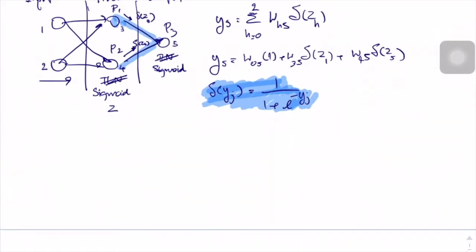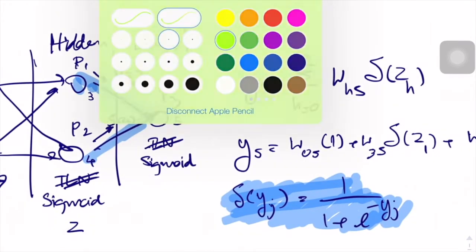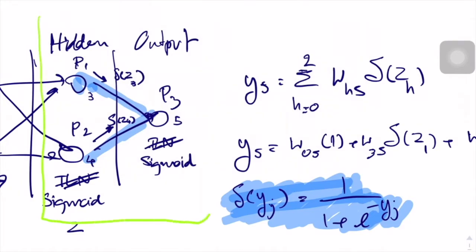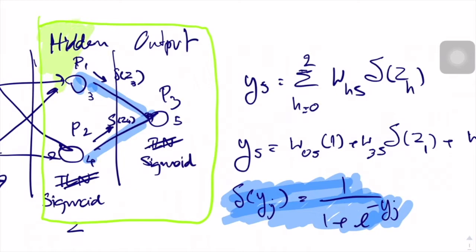In the backward path, we can do it like we did with the sigmoid neuron training — we focus on just the output layer. We separate it: the output from the hidden layer will be the input of the output layer, highlighted in green.